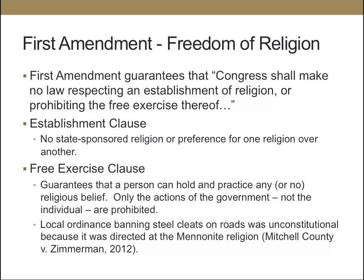Freedom of Religion under the First Amendment guarantees that Congress shall make no law respecting the establishment of religion or prohibiting the free exercise thereof. It doesn't require a complete separation of church and state — instead, it prohibits Congress from establishing a religion or giving preference to one religion over another, and allows the free exercise of religion, guaranteeing that a person can hold any religious practice or no religious practice. This relates to the government's interference with free exercise, not individuals. An example from the textbook is Mitchell County v. Zimmerman, where a local ordinance banned steel cleats on roads, and the court determined that was an unconstitutional restriction of the free exercise of religion because it was directed specifically at Mennonites.